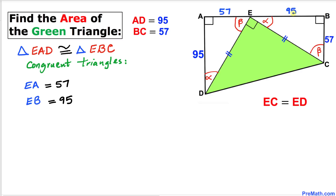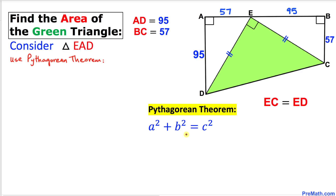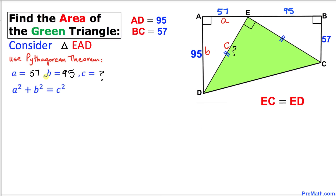Now let's focus on triangle EAD. We know that this is a right triangle, so we are going to use the Pythagorean theorem: A squared plus B squared equals C squared. Let me call this side A, this side B, and the longest leg side C. In our case A equals 57 and B equals 95, so we have 57 squared plus 95 squared equals C squared.